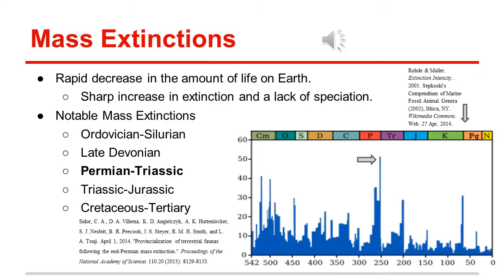Over the course of the Earth's existence, we recognize five notable mass extinctions. These include the Ordovician-Silurian mass extinction, the Late Devonian mass extinction, the Permian-Triassic mass extinction, the Triassic-Jurassic mass extinction, and the Cretaceous-Tertiary mass extinction.